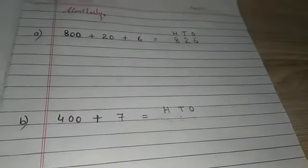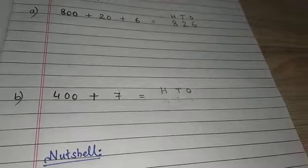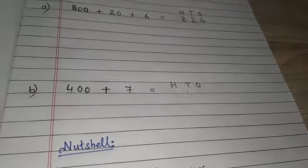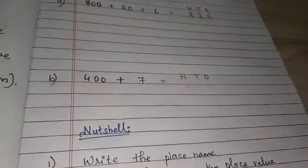Ones, tens, and hundreds. Now, start placing the numbers. 400 means 4 will go in hundreds column. Tens.